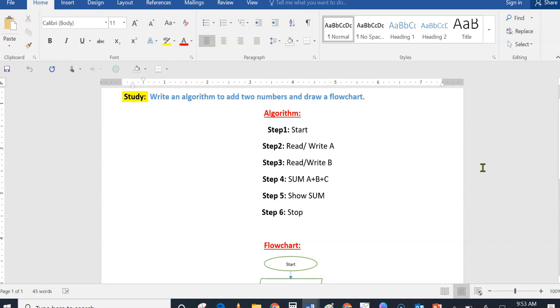Here I need to add two numbers and show it in a flowchart. Step one, it's a start - that is represented by an oval. Step two, I need to read or write letter A, which is the addend.